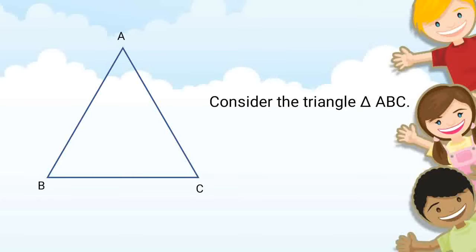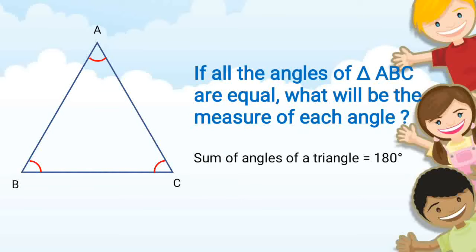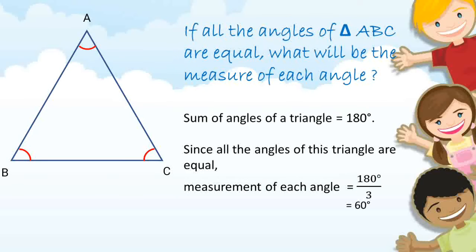Consider the triangle ABC. If all the angles of triangle ABC are equal, what will be the measure of each angle? The sum of angles of a triangle equals 180 degrees. So since all the angles of this triangle are equal, the measurement of each angle is 180 degrees divided by 3, that is equal to 60 degrees.